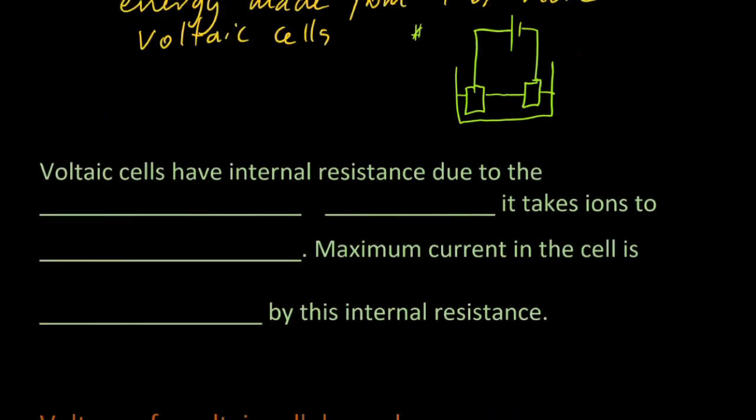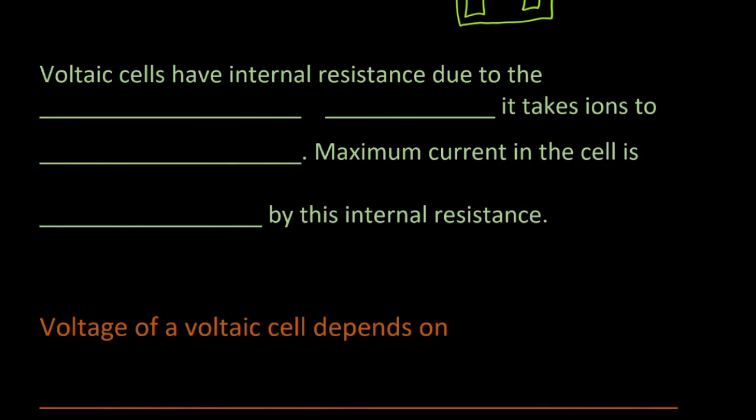Voltaic cells have internal resistance due to the finite time it takes ions to diffuse. I've not seen any questions that ask you to understand that, just to know it. The maximum current of a cell is limited by the internal resistance.